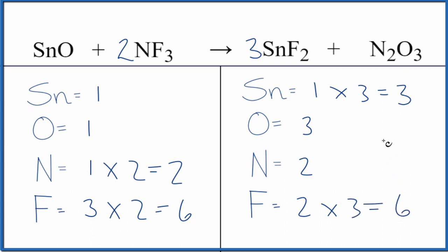So those are balanced. The only thing that's not balanced is the oxygens and the tin, and it looks like if we put a 3 here as our coefficient, 1 times 3 would give us 3 of those. 1 times 3, that gives us 3 of those, and we're done. This equation is balanced.